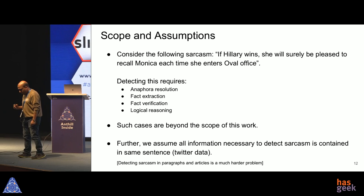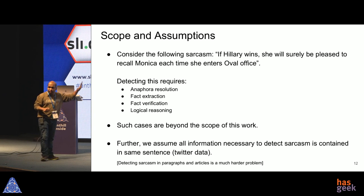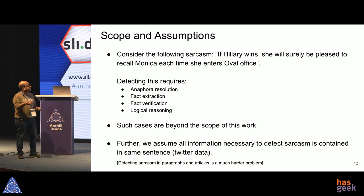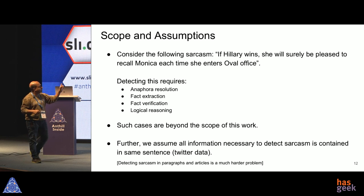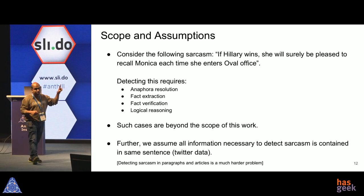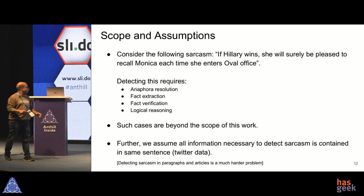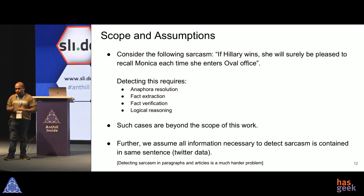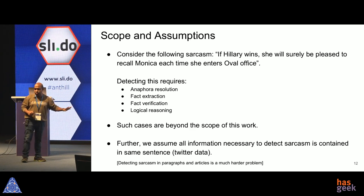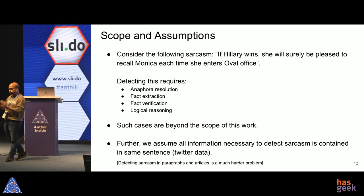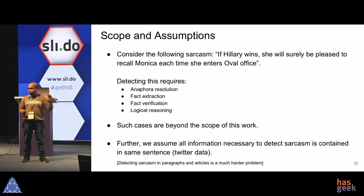Scope is an important aspect. Some sentences require understanding references to Hillary Clinton, historical facts about the presidential race, and contextual history — this is very complex. It is beyond the scope of this talk to address sentences of that complexity. We will deal only with sentences where all the information needed to detect sarcasm lies within the sentence itself. For this reason, we chose Twitter as the source of data.